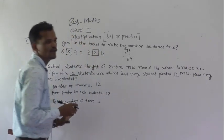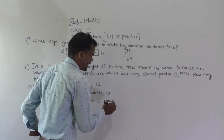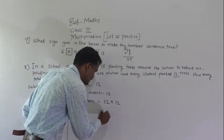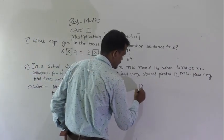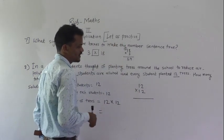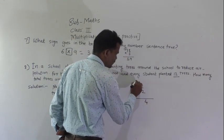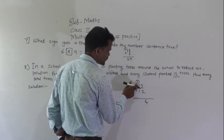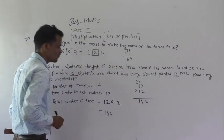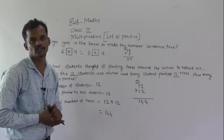Each student planted 12 trees. How many total trees are planted means number of students 12 and each student planted 12 trees. Do this multiplication, 12 multiply by 12. Do here 12 into 12. If you know the table of 12, you can solve directly. 12 twos are 24. 4 write here, 2 carry. 12 ones are 12, 12 plus 2, 14. So there were 144 trees are planted in all. Like this you have to solve this example. Bye-bye.